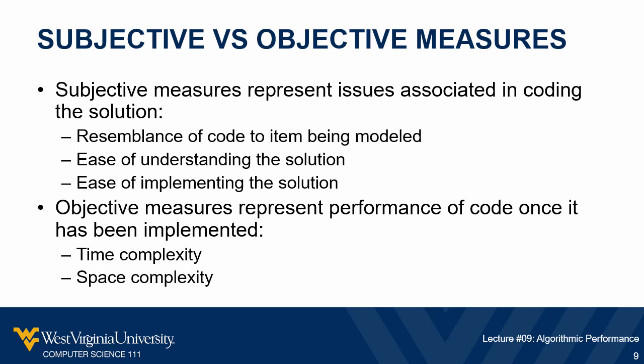Those different measures really do play different roles. The subjective measures — the human factors ones — are going to play into our ability to implement the solution: how closely does our code resemble the problem as posed, how easy is it to understand, how easy is it to implement. These are things that come up at coding time or during maintenance. The objective measures are going to measure how that code performs when it's actually being executed — these are runtime measures that impact the program on an ongoing basis, as opposed to subjective measures which are really only relevant while we're coding.